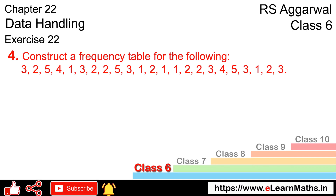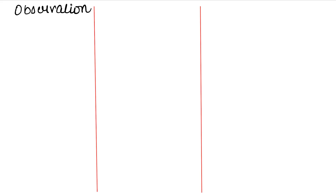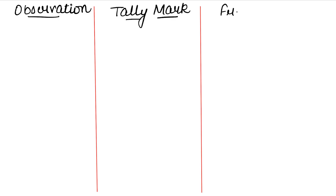Let's do question number 4 of Exercise 22, Data Handling. Question 4 asks us to construct a frequency table. As in the previous questions, we make 3 columns: Observation, Tally Mark, and Frequency.